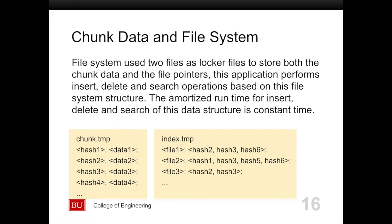For our chunk data and file system, we use two files as our locker files to store the data. One is chunk temp and the other is index temp. Chunk temp stores the data content and the chunk hash value, while the index stores the file name and the hash values contained in the file. By using pointers, we can retrieve the content efficiently to regenerate the original file.